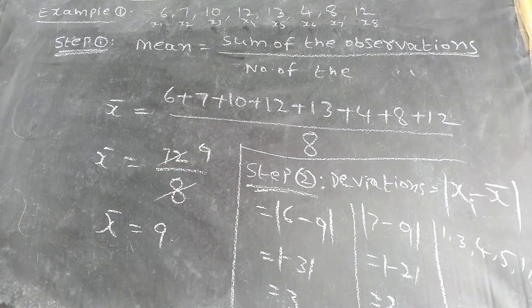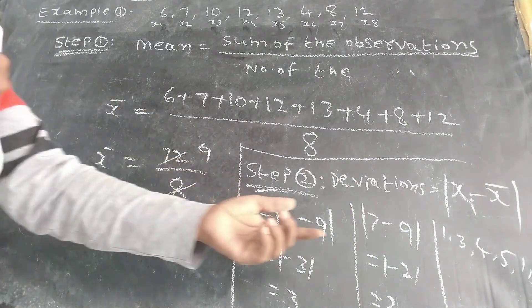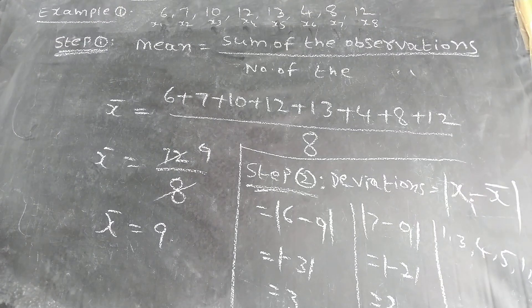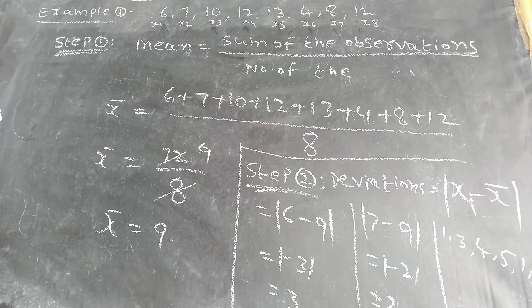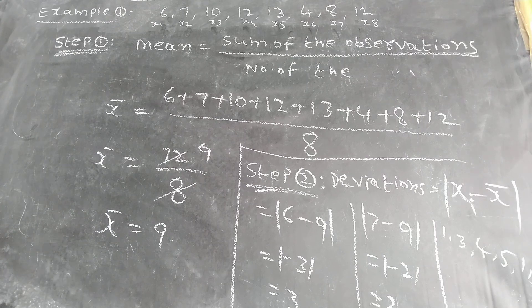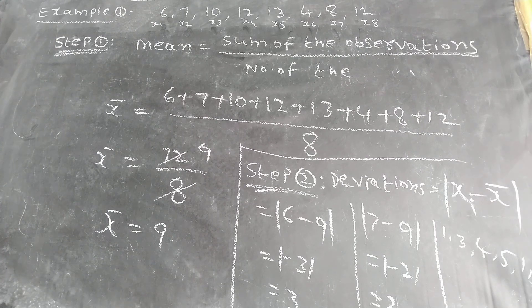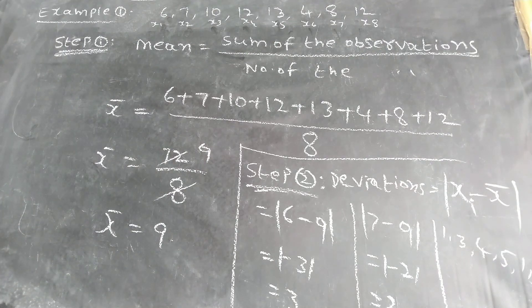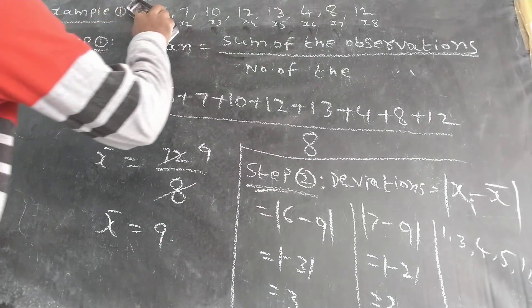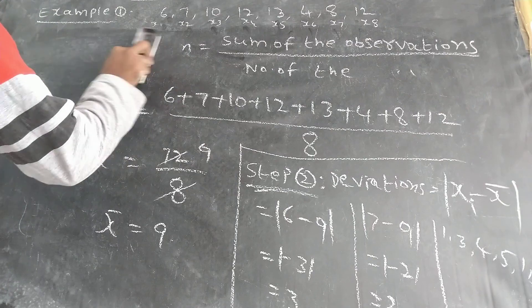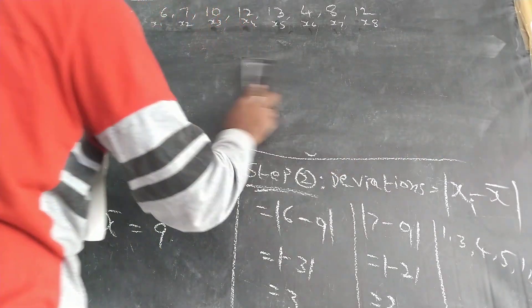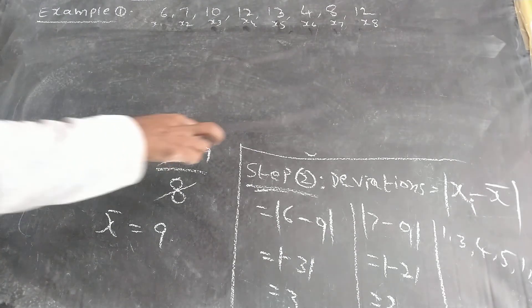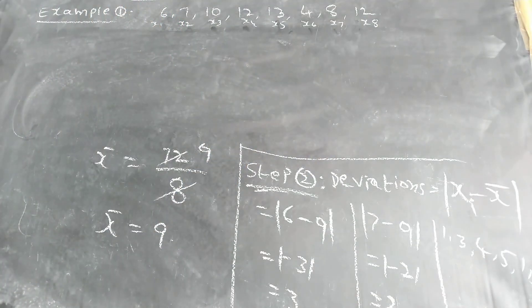Again, one more step. What you can find out? The sum of the values by number of the values. That is called finding the mean of deviation. This is completed.